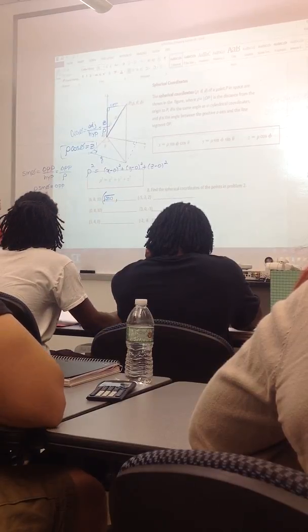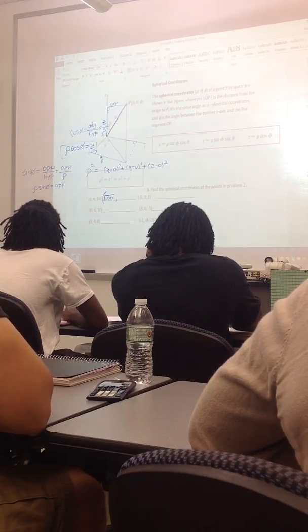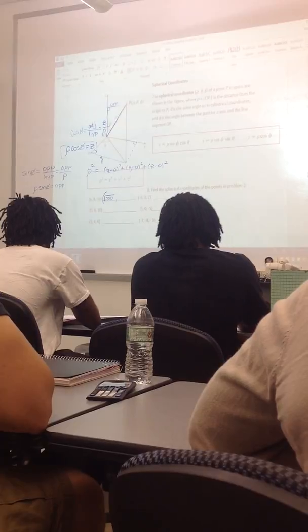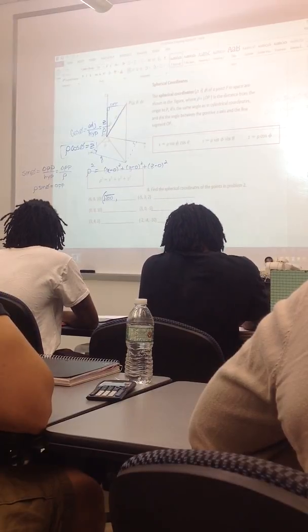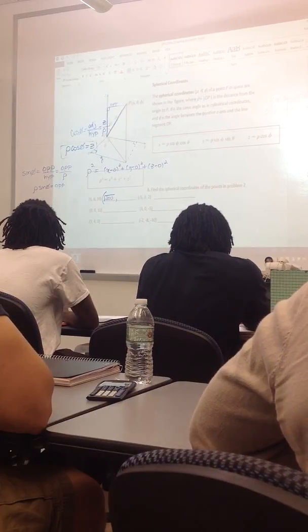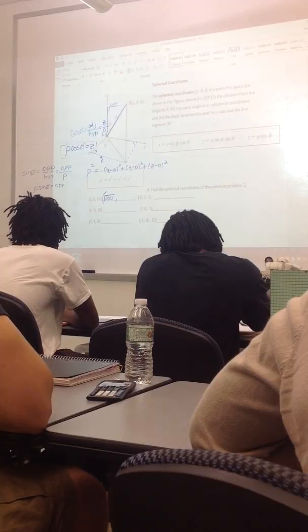Okay, so for right now, I'm going to use the same order that they have up there. So I'm going to put rho, theta, phi. And theta is the same theta for cylindrical, and so we already found it. So look back in your notes from Tuesday, and what theta did we find for cylindrical for that point?